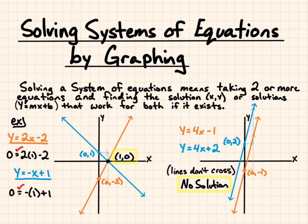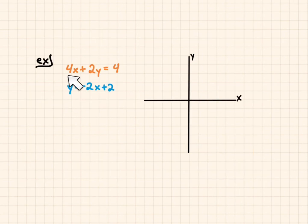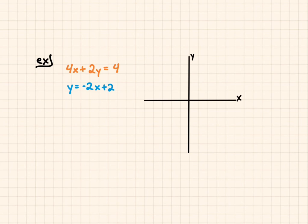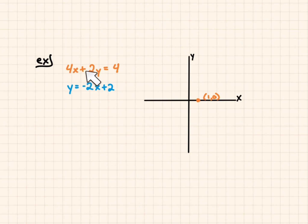There's one more example showing the three different cases. We have 4x plus 2y equals 4, and y equals negative 2x plus 2. The first equation is in standard form, so we block out variables and plot along the axes. If y equals 0, then 4x equals 4, so x equals 1, giving us the point (1, 0). If x equals 0, then 2y equals 4, so y equals 2. We graph that line.